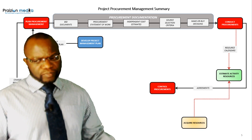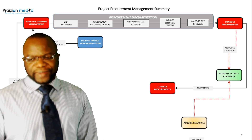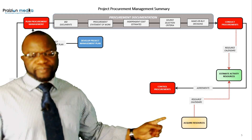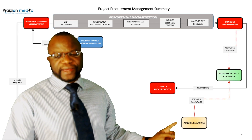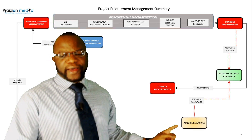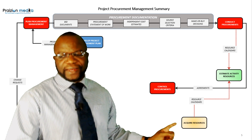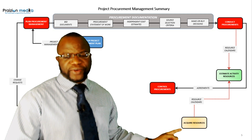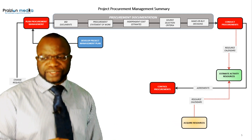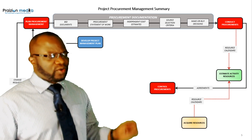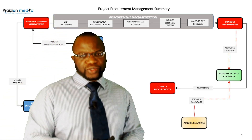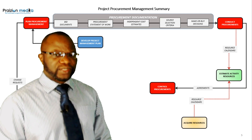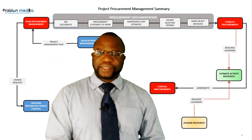Acquire Resources also feeds back into Estimate Activity Resources with resource calendars. So resource calendars come from Acquire Resources, but they also come from Conduct Procurements. You can see a lot of interconnection points — things flowing into one place. Estimate Activity Resources gets resource calendars from two different places, which is exactly what this map shows you. The procurement documentation also goes into Control Procurements.